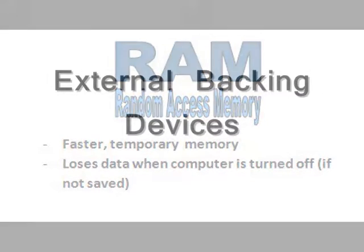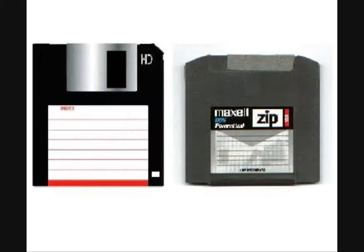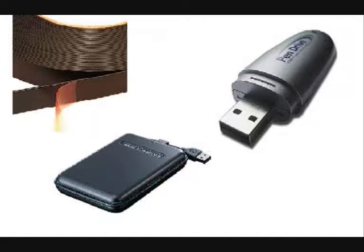You can also store data on external backing devices. These include magnetic disks such as floppy disks and zip disks, though these are rarely used nowadays. CD-ROMs and DVDs are examples of optical disks which can also be used to store data externally. Magnetic tape, external hard drives, and memory sticks can also be used.